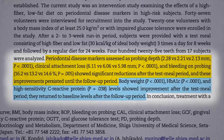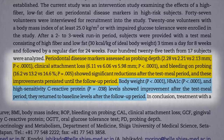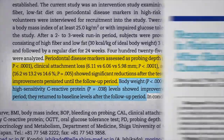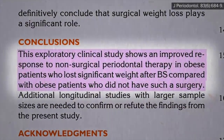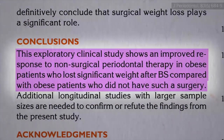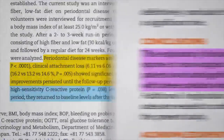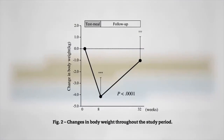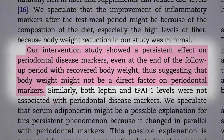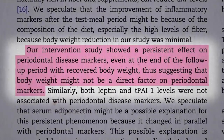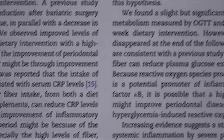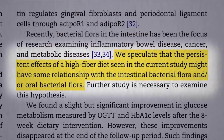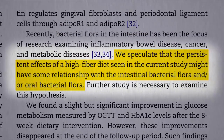But that complicates things. Maybe their mouths got better just because they lost so much weight — you can improve periodontal disease with just bariatric surgery, like stomach stapling. Well, after eight weeks on the diet, they went back to their regular diet and gained most of the weight back, but the periodontal disease improvements persisted, suggesting it was more than just weight loss. They're thinking maybe the high-fiber diet altered their gut flora, or maybe their oral flora.